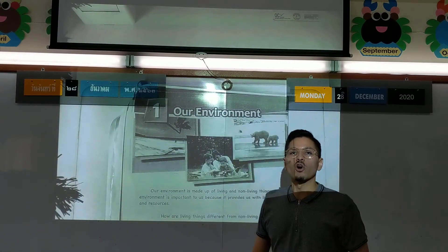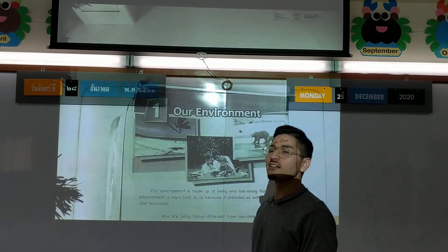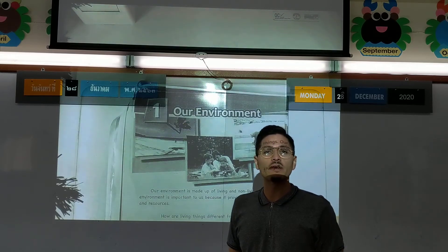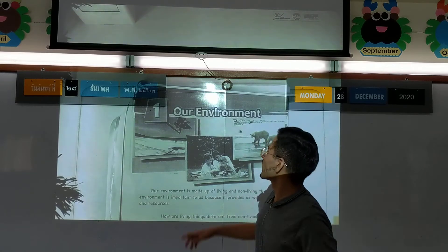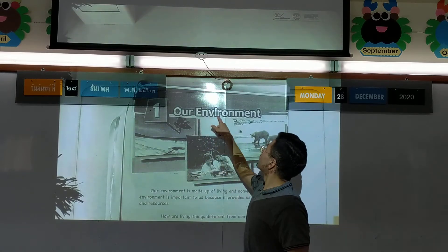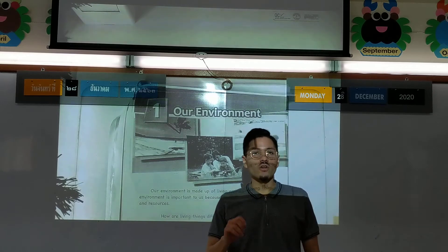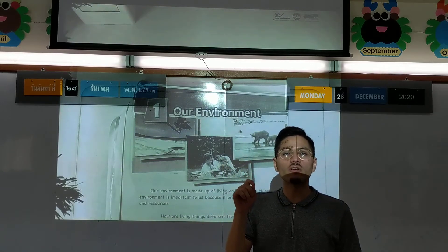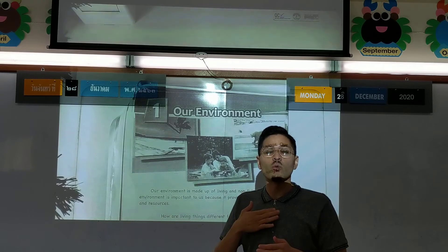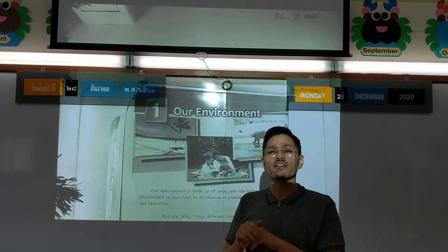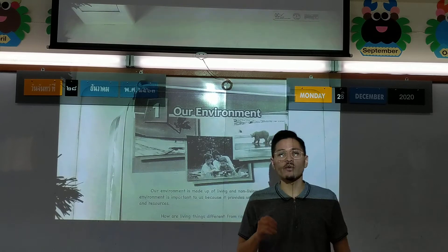Open your social studies book to page 63. We're going to talk about our environment. Get your pencil and you're going to underline what I underline - the important things. Okay, here we go.